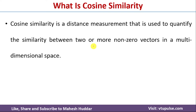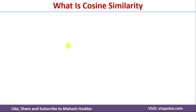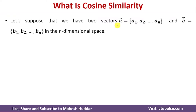Cosine similarity is a distance measurement that is used to quantify the similarity between two or more non-zero vectors in multi-dimensional space. For example, let us say that A is a vector with a1, a2, and an as the coefficients, and B is a vector with b1, b2, bn as the coefficients in n-dimensional space.